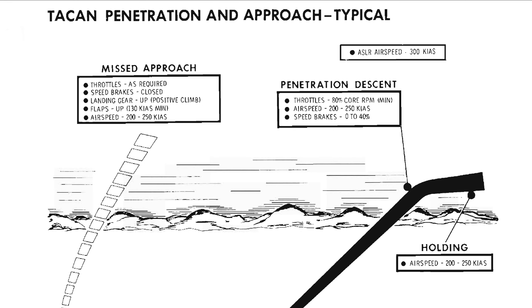TACAN Instrument Approach and Landing is divided into three phases. The first is the Penetration Descent. In this phase, with throttles set to 80% core RPM, a descent at 1,500 feet per minute, or FPM, is made, with speed brakes open at 40% to maintain airspeed between 200 and 250 knots.